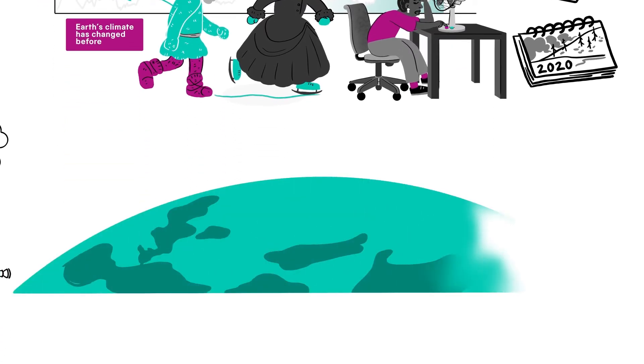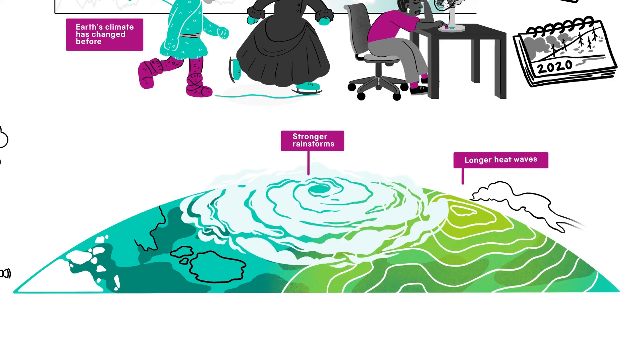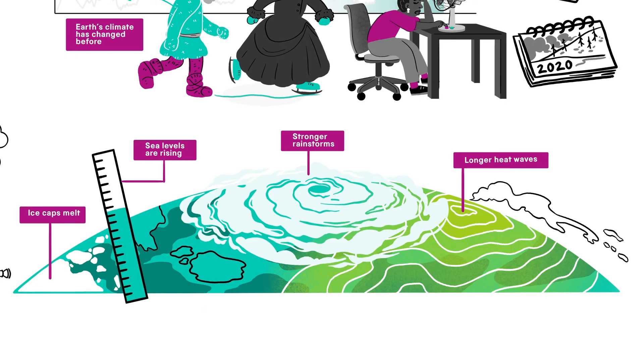We're already seeing the dangers of global warming. A warmer atmosphere creates more extreme weather, stronger rainstorms, longer heat waves and more frequent droughts. Sea levels are rising too as the oceans warm and ice caps melt, putting low-lying coastal areas at risk.